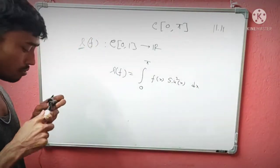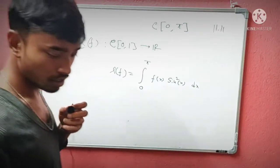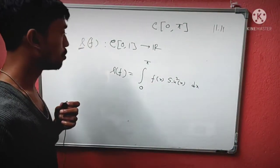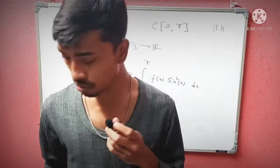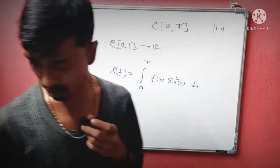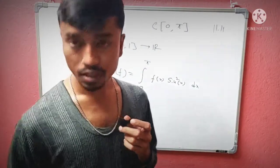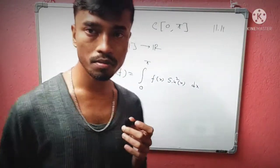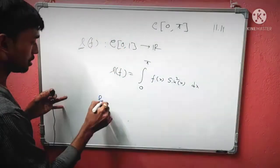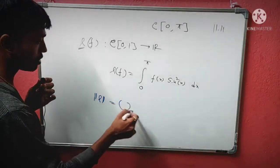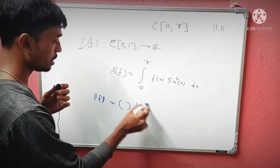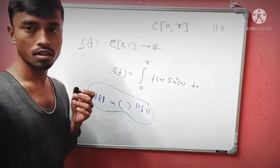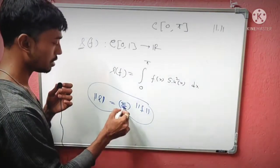We need to find the norm of this linear functional. The norm of a linear functional means |L(f)| ≤ K||f||. If we can show this with equality for some function, then K is the norm of the linear functional.